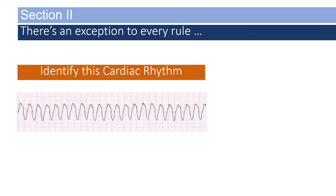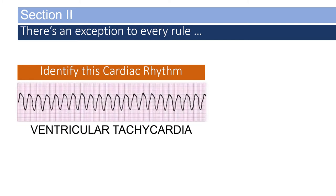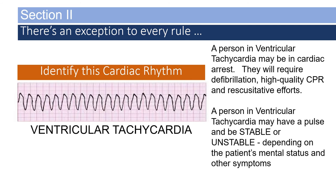Can you identify this cardiac rhythm? If you identified this as ventricular tachycardia, you are correct. A person in ventricular tachycardia may be in cardiac arrest, requiring defibrillation, high-quality CPR, and resuscitative efforts. A person in ventricular tachycardia may also have a pulse and may be stable or unstable, depending on mental status and other signs and symptoms — and this will mitigate your course of care.